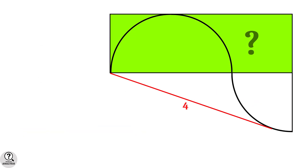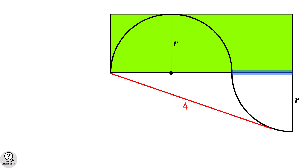Now consider the diagram. Suppose the radius of the semicircle is R units. Then, since both the semicircle and quarter circle have equal radius, the radius of the quarter circle is also R units. This side is also R units. Also, the diameter of the semicircle is 2R.